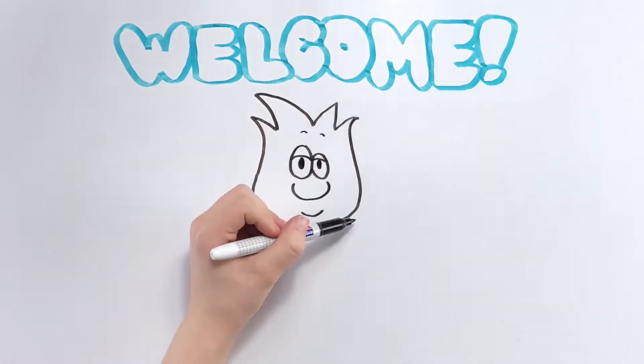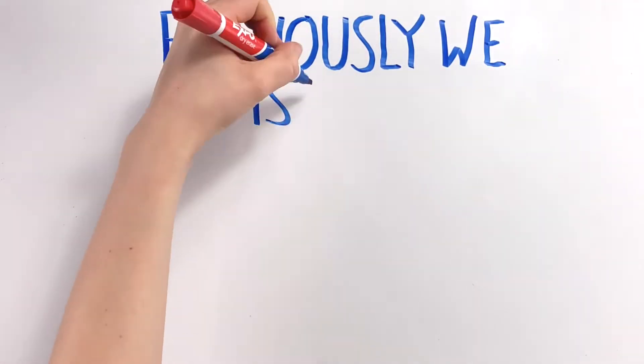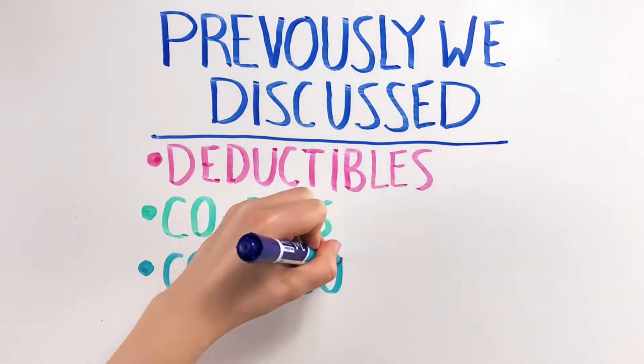Hello and welcome to Part 2 of our Understanding Insurance video series. In our last episode, we talked about common insurance terms including deductibles, copays, and coinsurances.